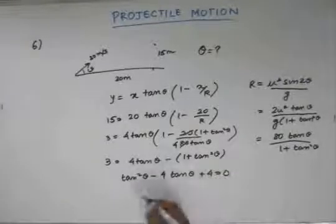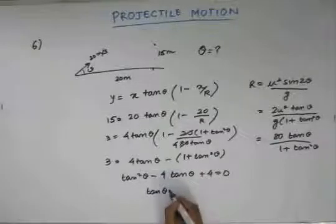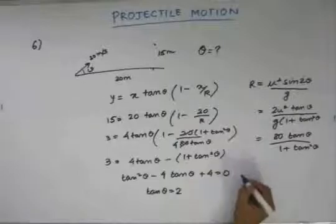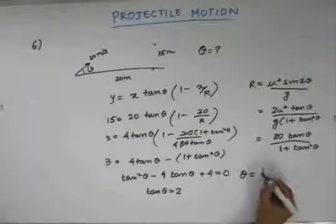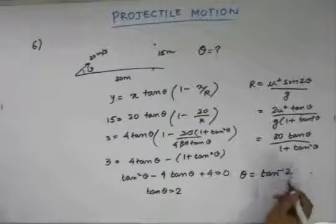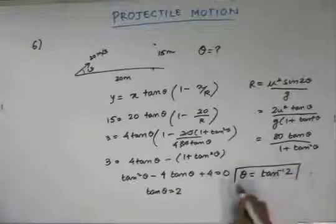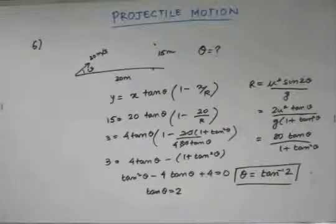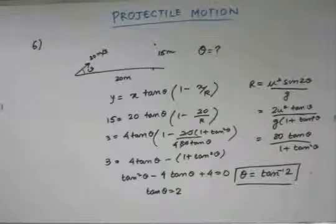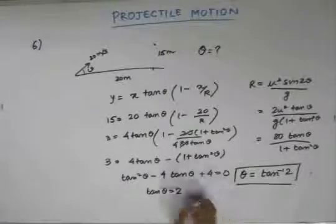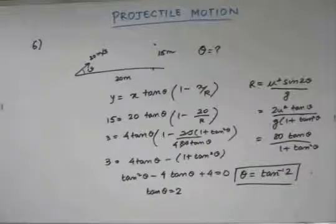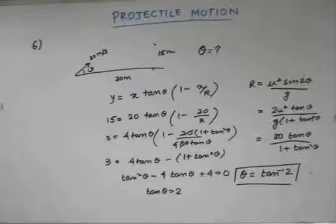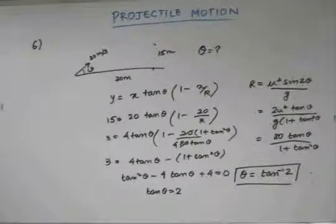So tan theta equals 2 is the solution, and the angle of projection is tan inverse of 2. The quadratic factors as (tan theta minus 2) squared equals 0, confirming this result. This equation was again based on the equation of trajectory and the range of the particle. Now let's move to the seventh problem.